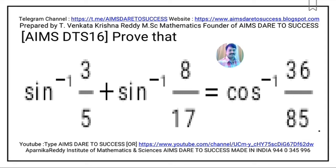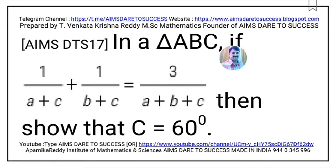Question 16: If 3/(A + B + C), then show that 1/(A + C) + 1/(B + C) = 3/(A + B + C), and hence show that C = 60°. This question is from Properties of Triangles. All SAQs for Section B are complete — write any 5 out of 7 questions, 5 into 4 equals 20 marks.